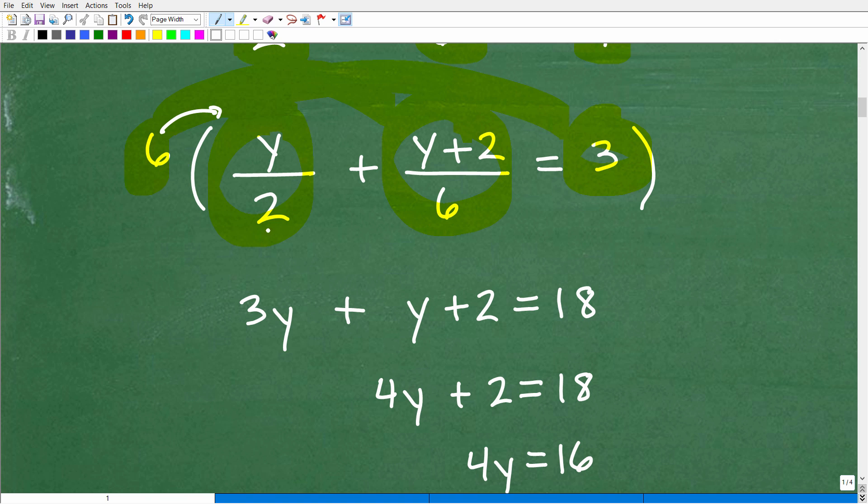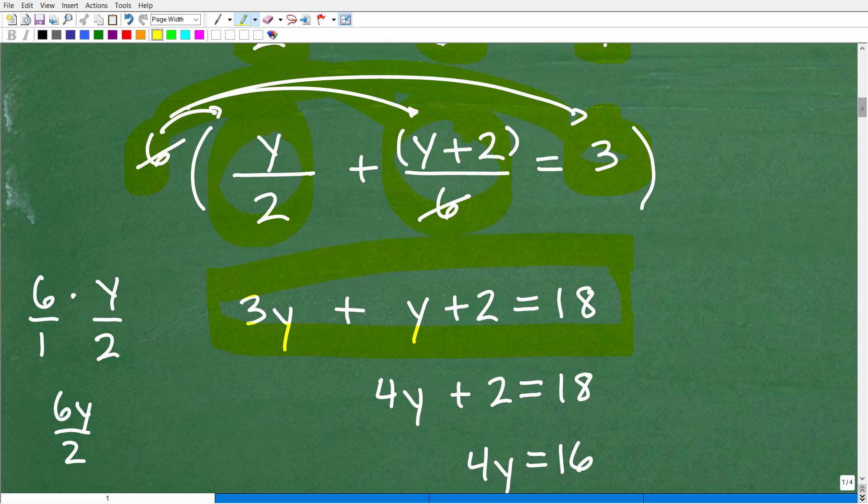So when I'm multiplying six times y/2, I could just kind of cross cancel. Two goes into six three times. So that's going to be 3y. Now, if you need to see that more explicitly, you can have 6 times y/2 or 6/1 times y/2. So that's 6y/2. Of course, you're going to get 3y. So hopefully you can see the cross canceling going on here. All right. So now let's go ahead and do six times (y+2)/6. So six cross cancels with six there. So I'm just left with y+2. And then I have six times three, which of course is 18. So by multiplying by the lowest common denominator, I'm left with this lovely basic equation right there.